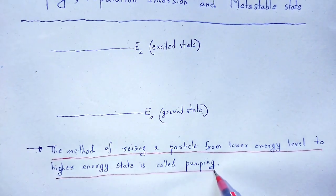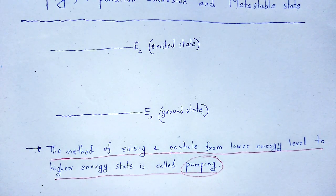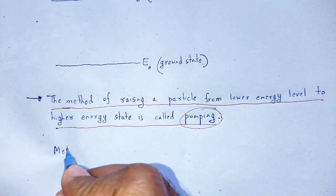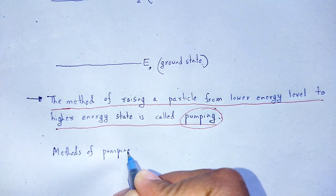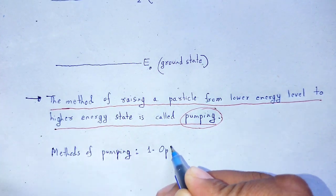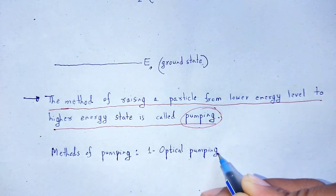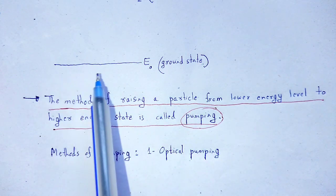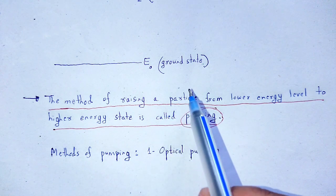That is pumping. There are various methods of pumping. One method is optical pumping. In case of optical pumping, light source energy is used to provide energy to the ground state atoms, molecules, or electrons — basically, we call them particles.